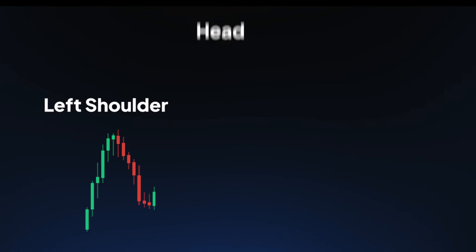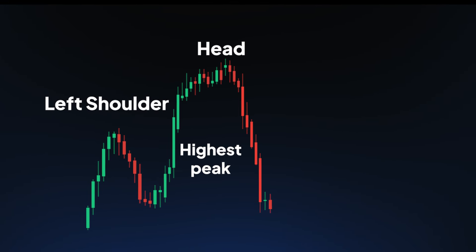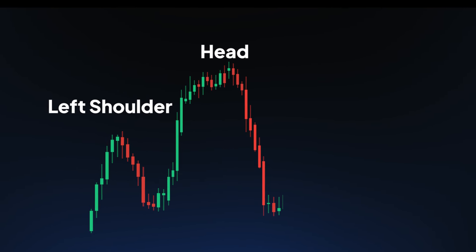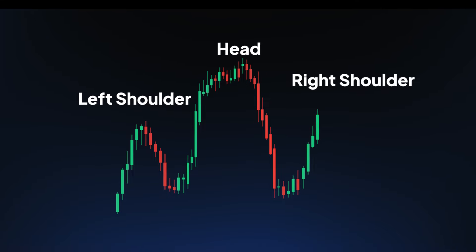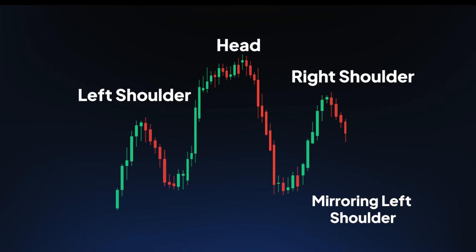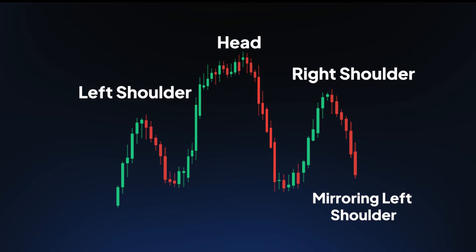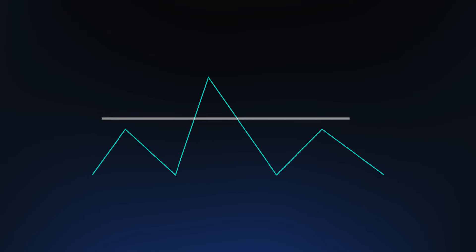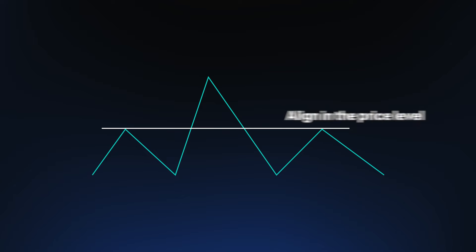Head: the highest peak, indicating a temporary surge in buying. Right shoulder: the third peak mirroring the left shoulder with another round of selling pressure. Apart from recognising the pattern, symmetry and volume are crucial elements. The left and right shoulders should align in price level, with the head standing tall.